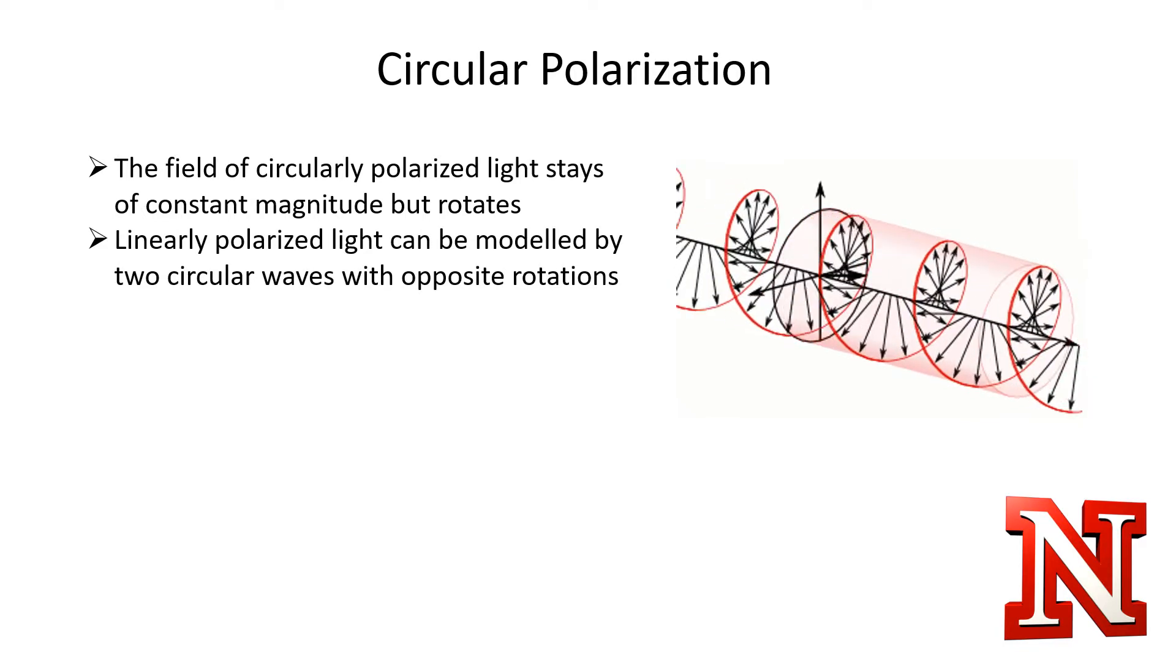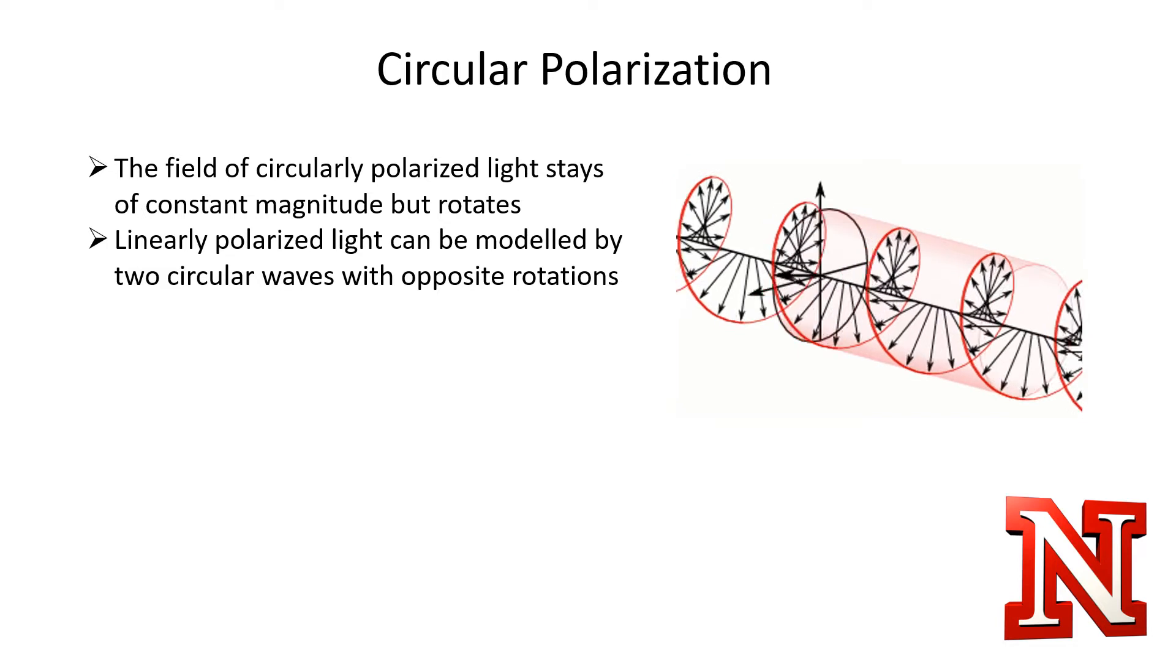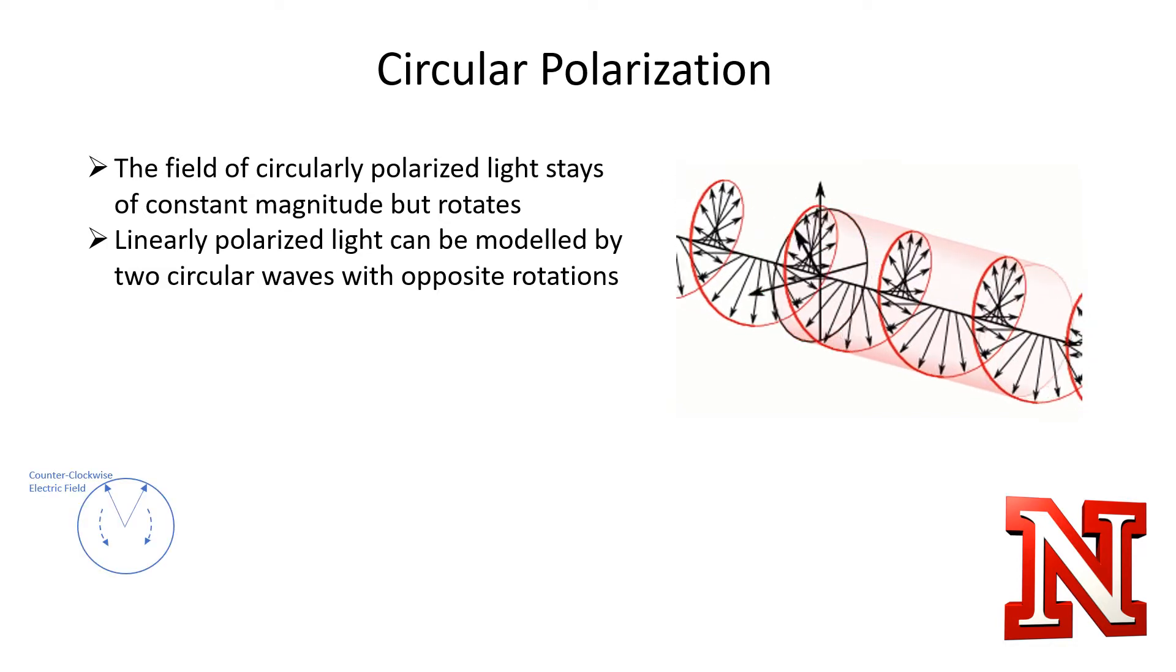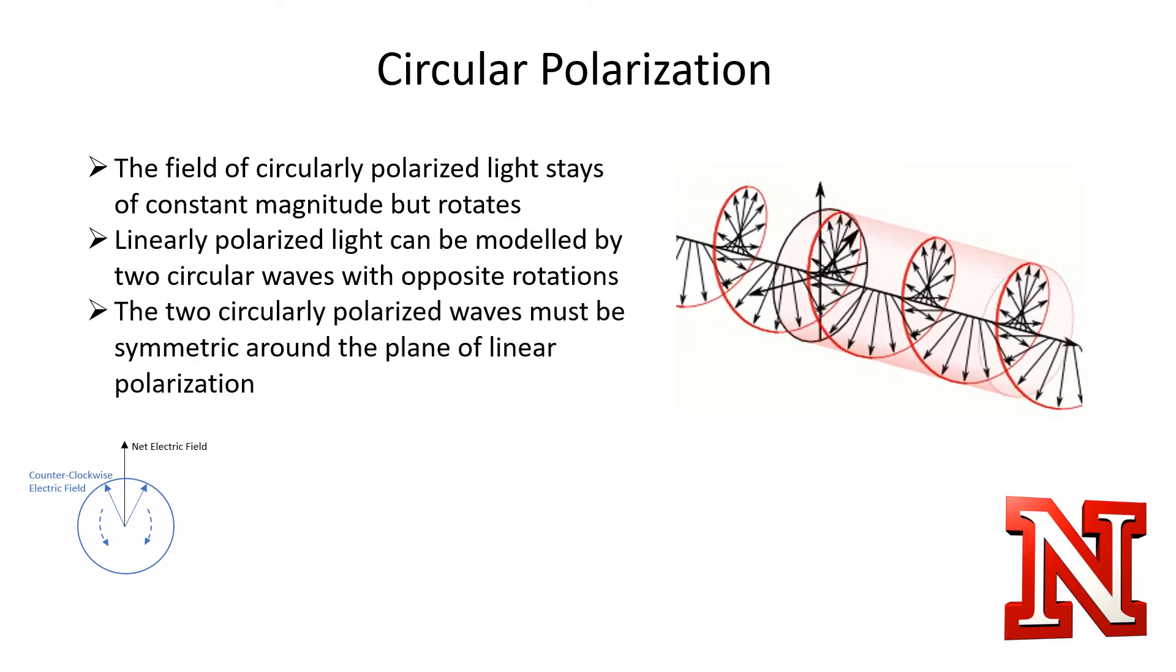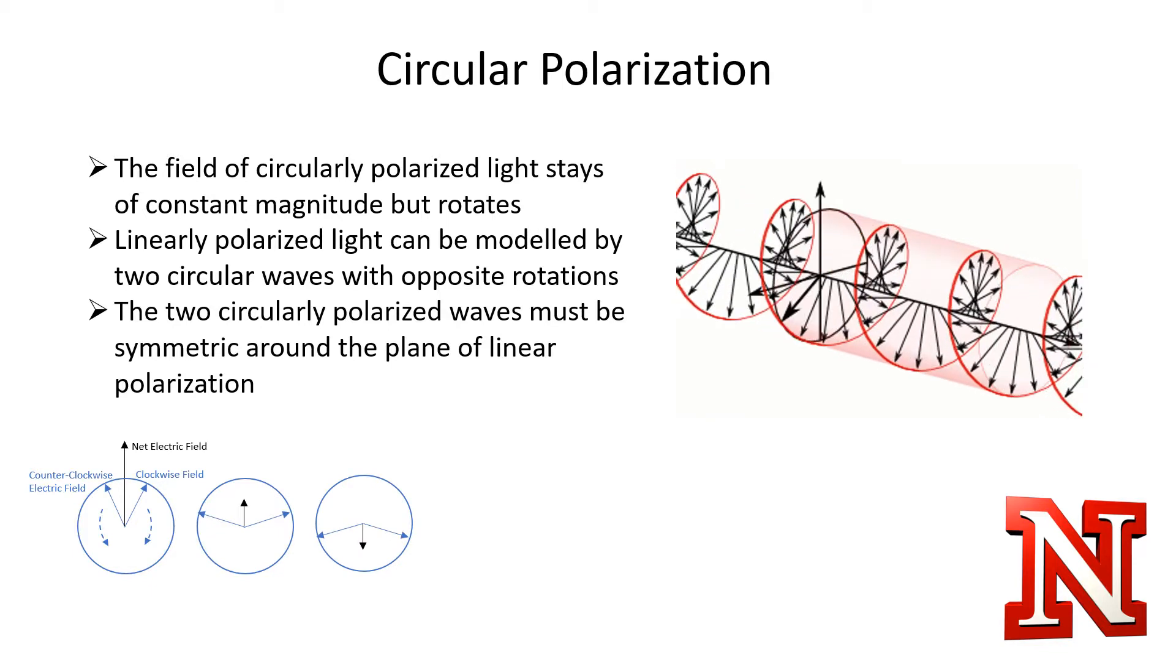Two circularly polarized waves can model a linearly polarized wave. If we have two circular waves traveling in opposite directions, they will cancel each other out along one direction and add in the other. As they move around, they will continue to cancel in that direction, staying symmetric around the plane of polarization.